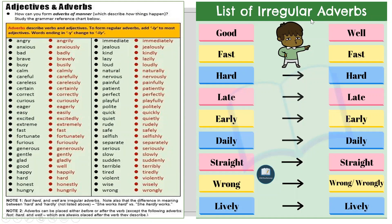When it comes to irregular adverbs, there are two rules. The first rule is that irregular adverbs either change 100% — you change the word completely. For example, the adjective 'good', when modified to an adverb, becomes 'well'. We cannot say 'goodly' — with irregular adverbs, rule number one is you might have to change it 100%.